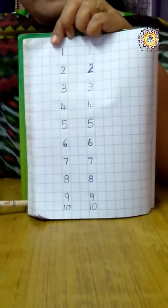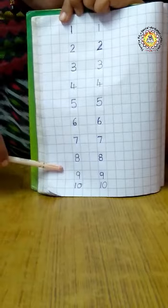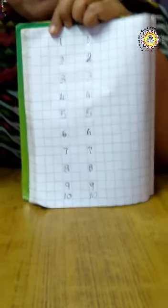Okay children. Children see these numbers from 1 to 10. Practice at home. Bye children. Bye.